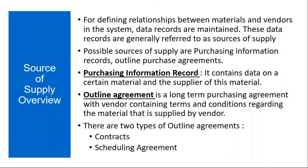So what is this purchase info record? It contains data on a certain material and the supplier of that material. The purchase info record basically holds data for the material and supplier combination.